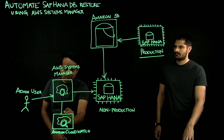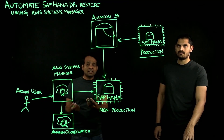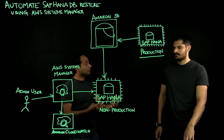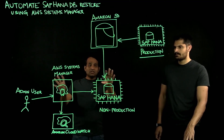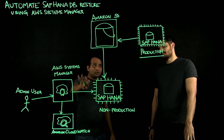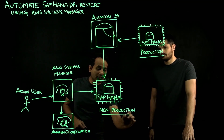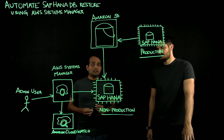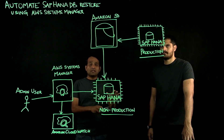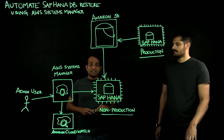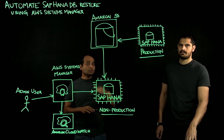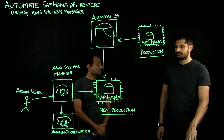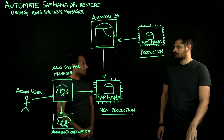Amazon CloudWatch is leveraged by Systems Manager to log each and every step and give you information about it. The SSM document takes care of restoring it once you specify the backup you want to restore and the timestamp you want to roll forward to. It completes that, and your non-production system is now refreshed with your production database.